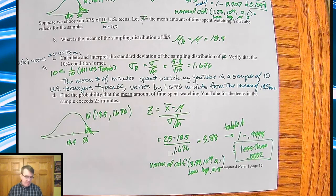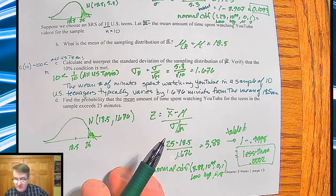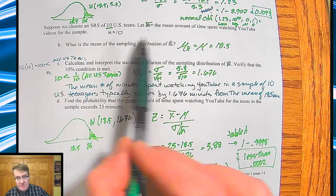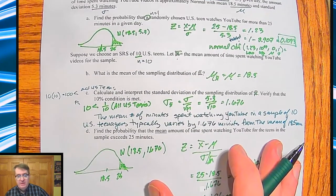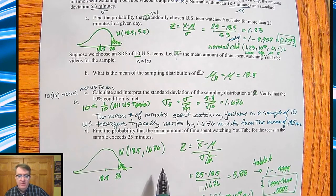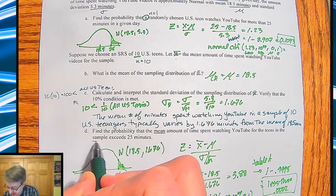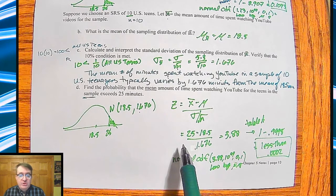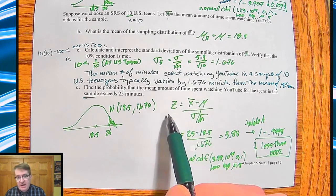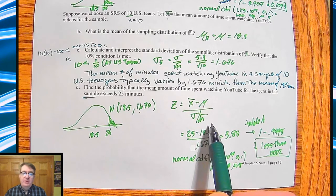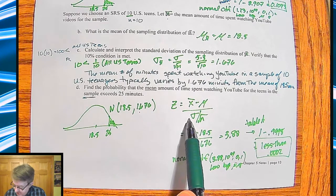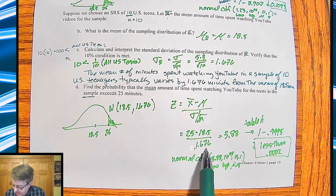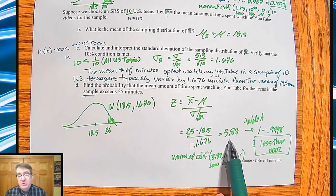And then down here, we're talking about what happens, what are the chances, find the probability that the mean amount of time spent watching YouTube for 10 teens exceeds 25 minutes. So same problem as above, except that now we're doing it with a group of 10. So because of that, we're going to be using the 1.676 deviation. Everything else is pretty much the same. You do want to write out the formula by itself first. That's one of the things the graders check. And then down here, notice, I'm just going to go ahead, since we calculated up here in part C, I'm just using the 1.676 down here. So when I go through and calculate this, my new Z score is now 3.88.